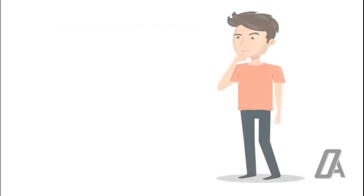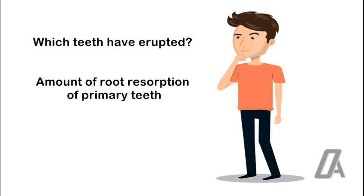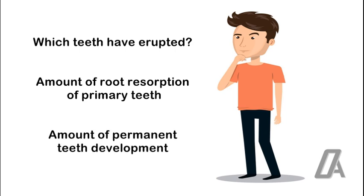Dental age is usually assessed with three characteristics: first, based on which teeth have erupted; second, the amount of root resorption of primary teeth; and third, the amount of permanent teeth development.